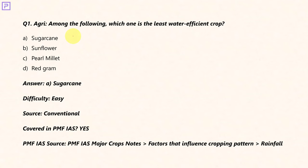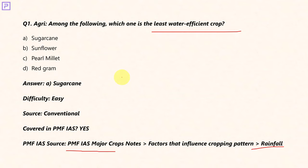Moving on to agriculture questions asked in UPSC Prelims 2021. Among the following, which one is the least water efficient crop? We know that paddy and sugarcane are water intensive crops, while millets are the most water efficient crops. This information can be gathered from PMFIS major crops notes, where we have discussed the influence of rainfall on various crops. The ranking from most to least water efficient: millets, then pulses, then oil seeds, and the least water efficient is sugarcane.